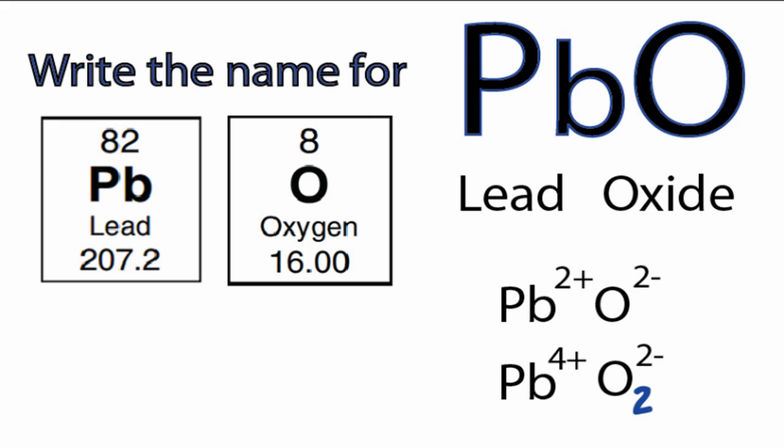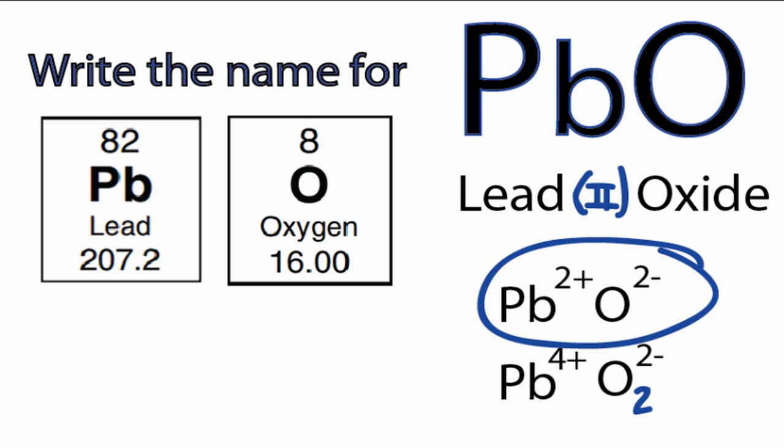The way we solve this is we put a Roman numeral II in parentheses right after the word lead. So now there's really no question. We're saying lead II, that means it has a +2, and there will only be one oxygen to balance it out. So PbO is going to be the formula, and the name is going to be lead(II) oxide.